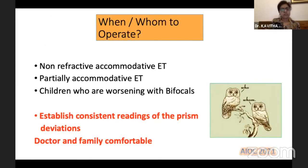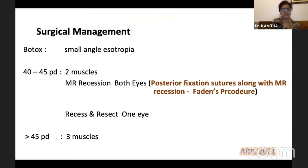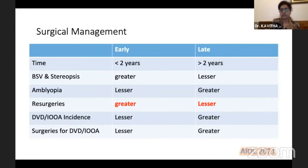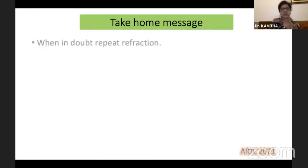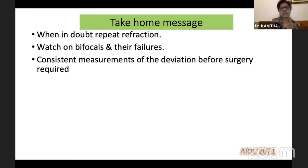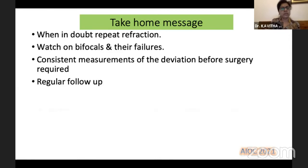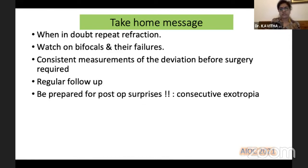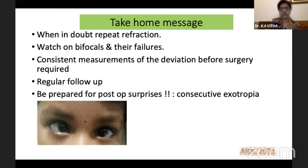Most important is to establish consistent readings of the prism deviations and ensure both the doctor and family agree before proceeding. Early surgery has greater advantage for binocular outcomes. When in doubt, repeat refraction and watch on bifocals. Consistent measurements of the deviation before surgery are required, along with regular follow-up. Be prepared for post-operative surprises, especially consecutive exotropia, as seen in the image shown.